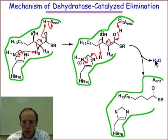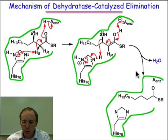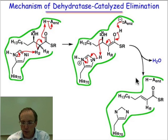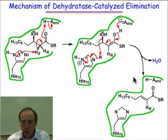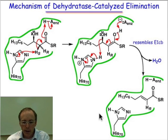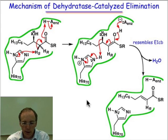Water is lost. The side chains are returned — the imidazole ring to its neutral form and this acid to its protonated form. Along the way, we've left the HR, made the trans double bond, and the imidazole ring is back to its neutral state.